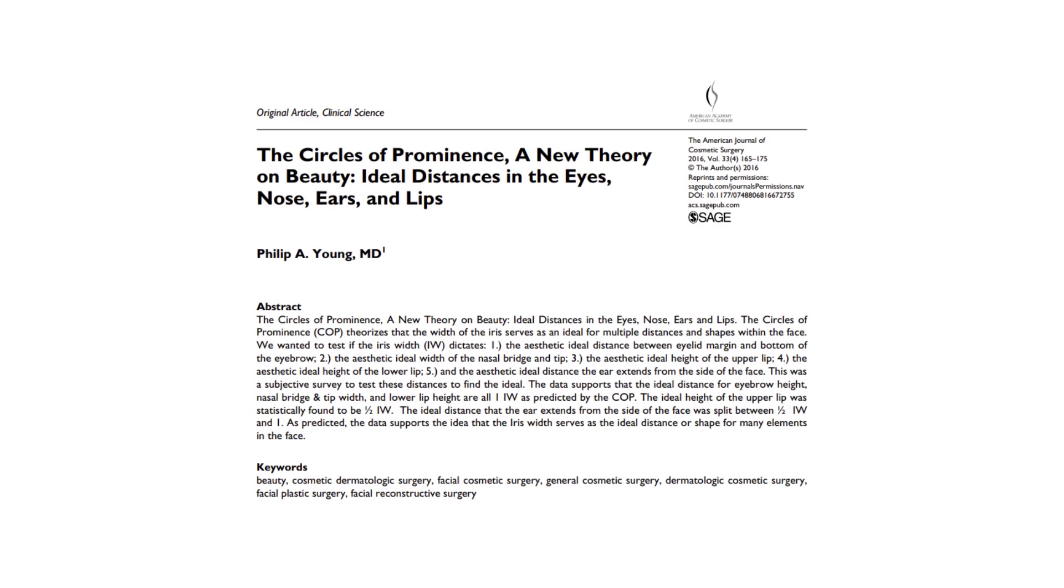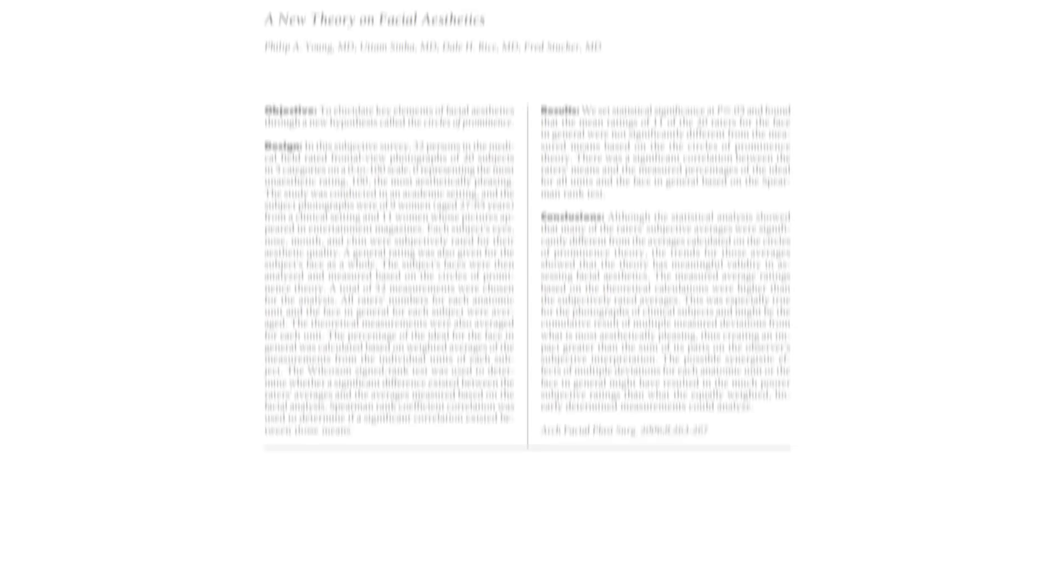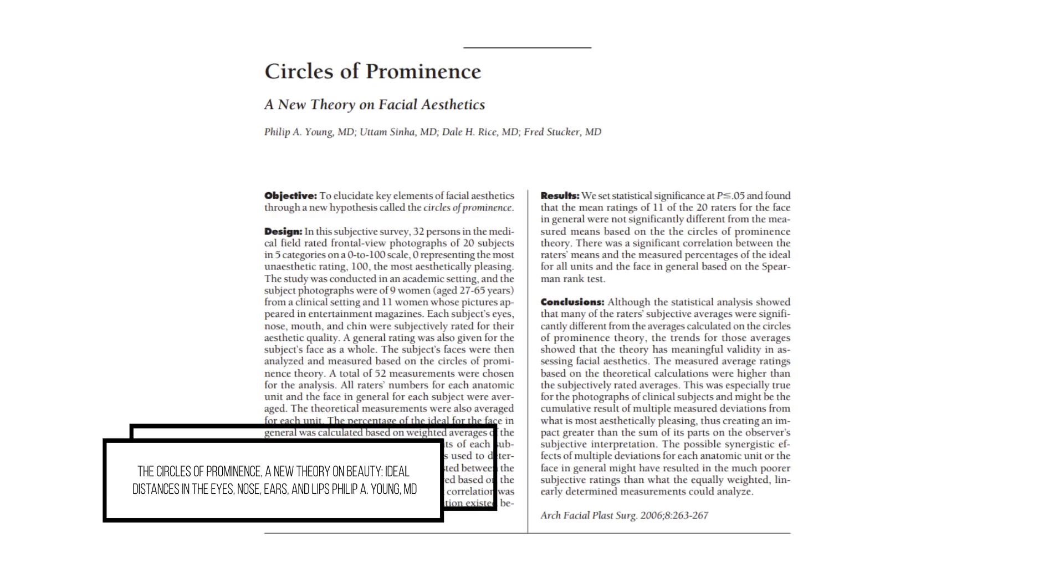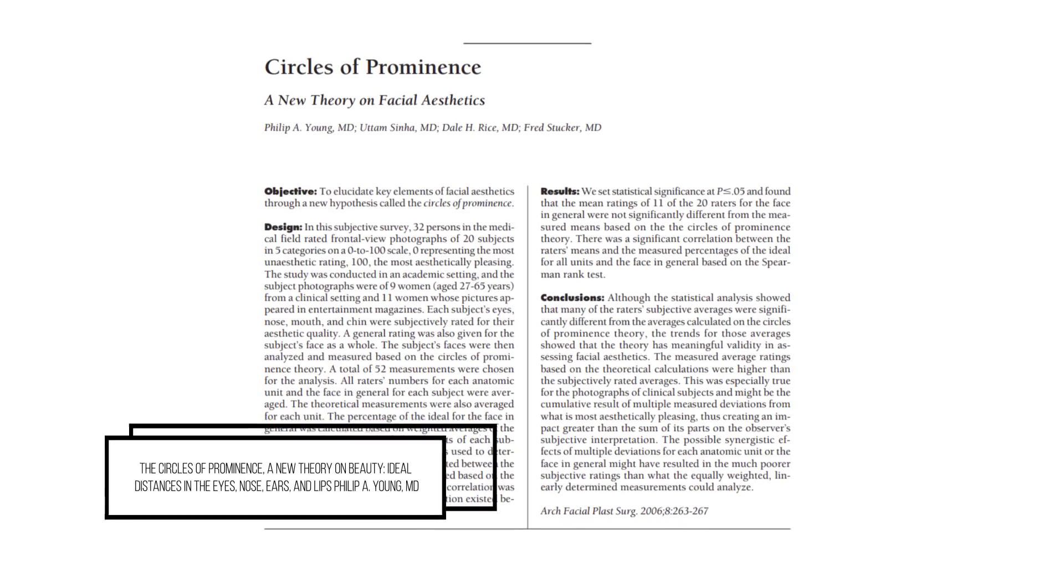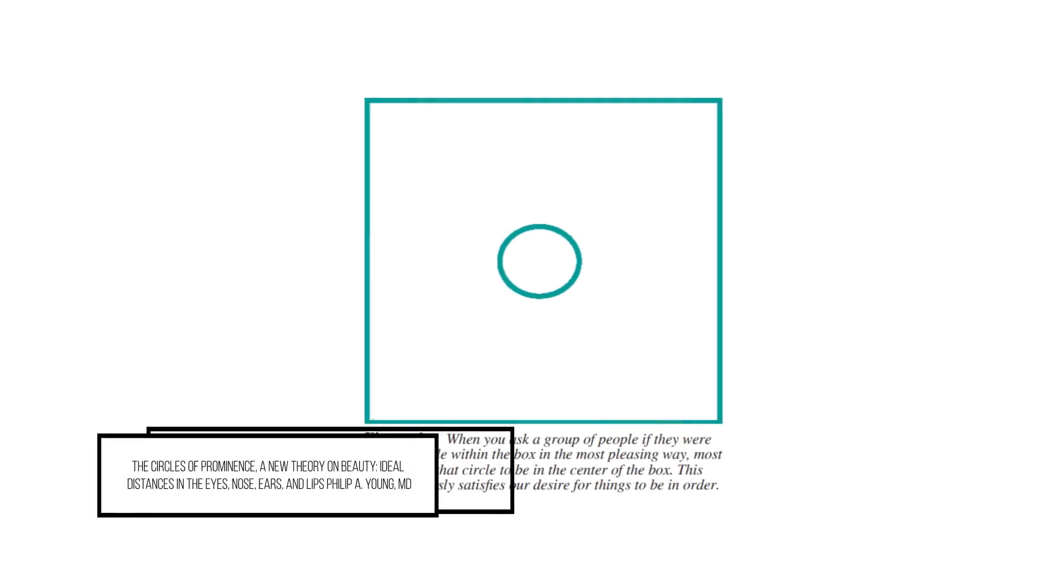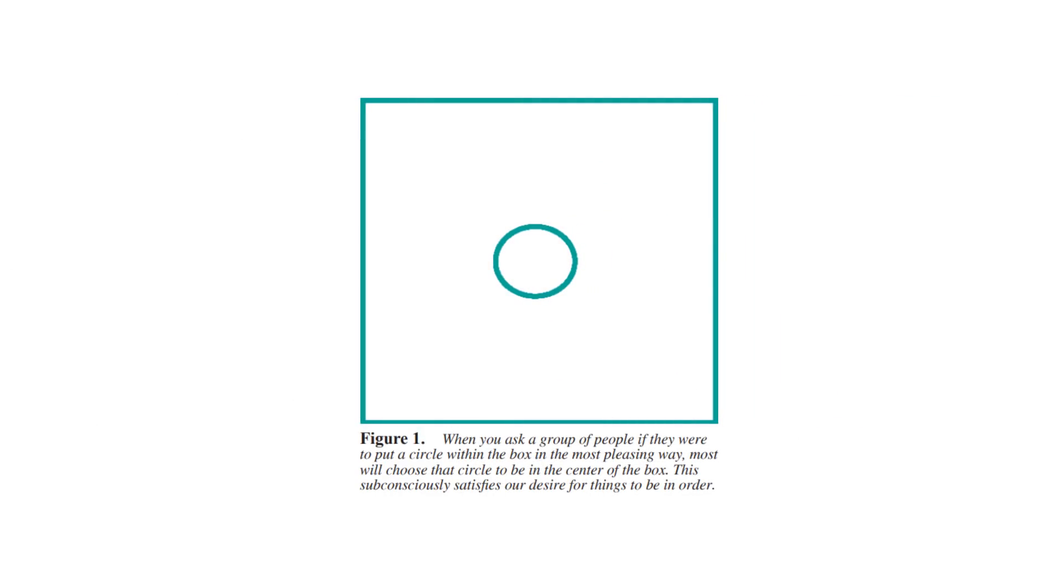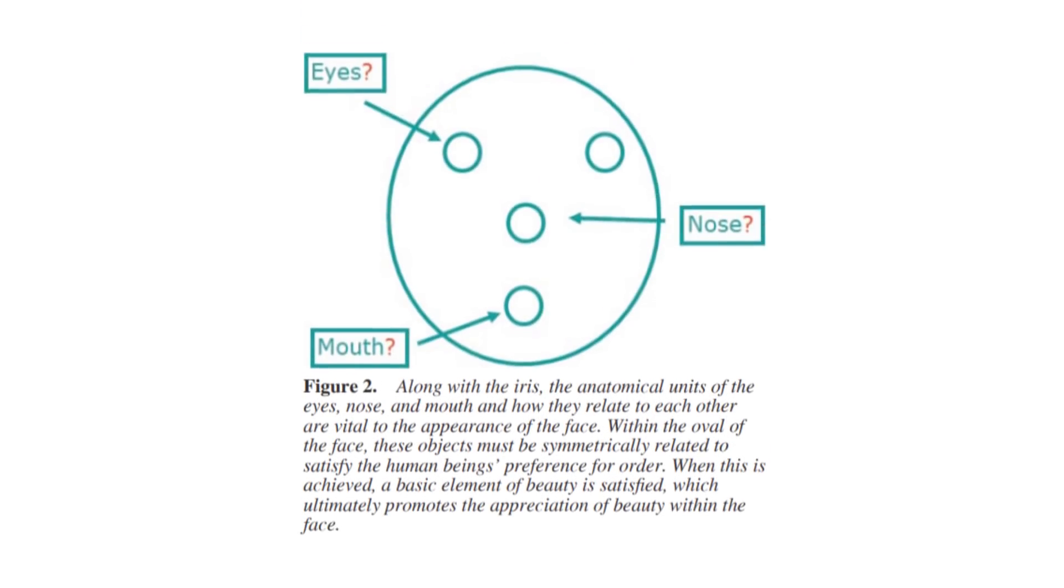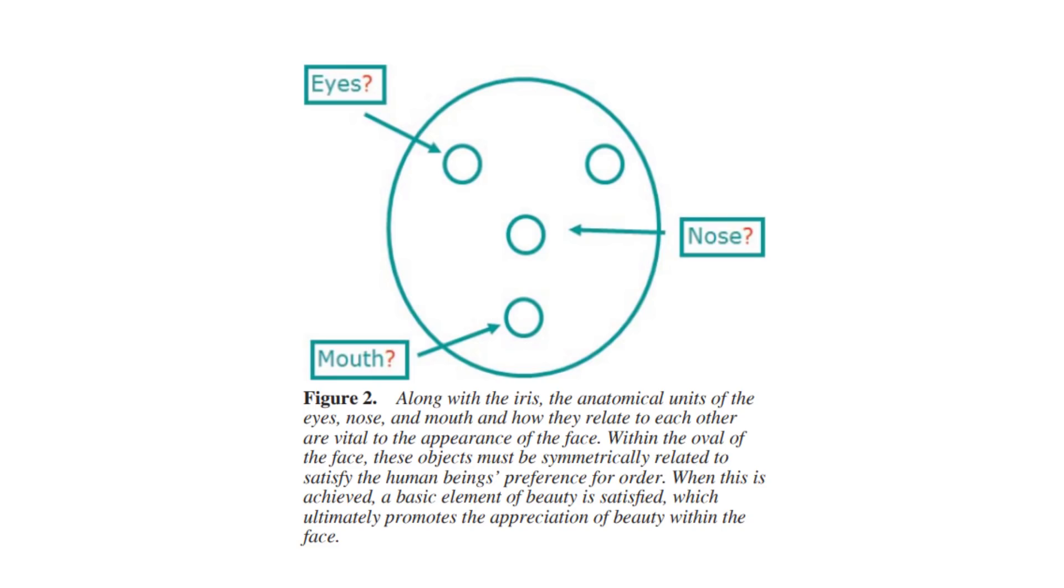There is however another way to assess faces that very few people know of. Multiple studies have looked at the concept of the circles of prominence which could possibly explain the ideal aesthetic values of the face. A person when asked to position a circle within a box would most likely place the circle in the center of the box. The same could be true for the face. The iris, nasal tip, lower lip could be thought of as a circle while the face can be considered as the box.